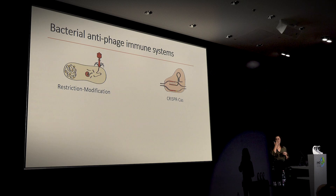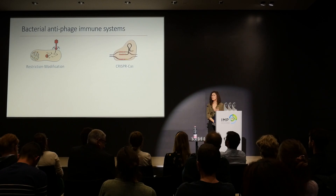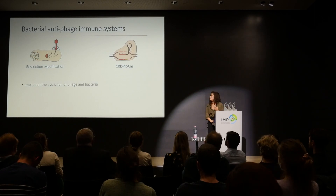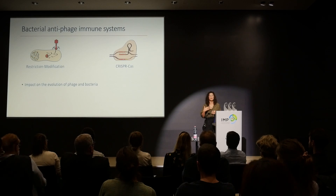But these systems do not defend against all phages and are not found in all bacteria. So we were wondering: are there any other immune mechanisms out there in bacterial genomes? And why do we care about bacterial immune systems? Well, first of all, these systems have a huge impact on the evolution of bacteria and phages.